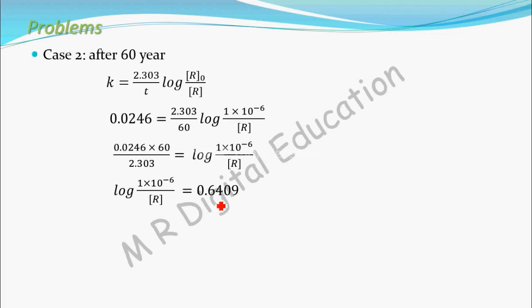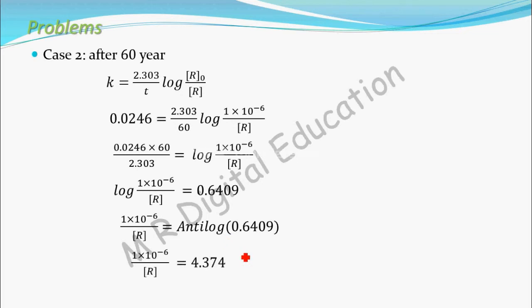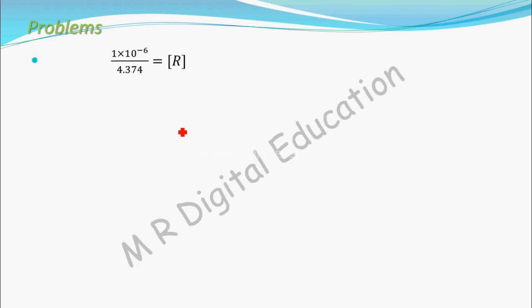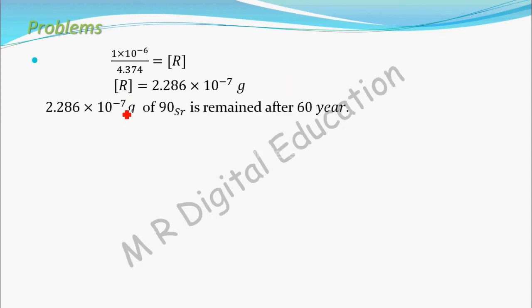The whole simplification gives 0.6409. Taking this log to the other side as an antilog, antilog of 0.6409 is 4.374. Solving for R: R equals 1×10⁻⁶ divided by 4.374, which gives R equal to 2.286×10⁻⁷ grams. Therefore, 2.286×10⁻⁷ grams of strontium remains after 60 years.